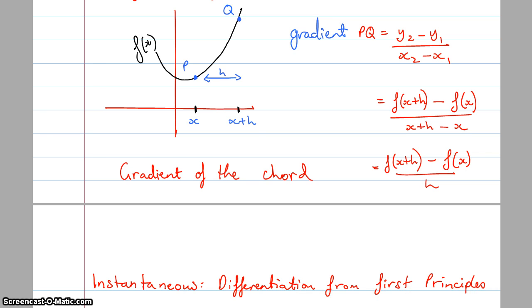Now we can have a look at the instantaneous rate of change. Now the instantaneous rate of change just looks at one point with respect to the next anticipated point. So rather than going between two points like this one has, it's saying what is the gradient at P with respect to the next point? What is the gradient at Q with respect to the next point?